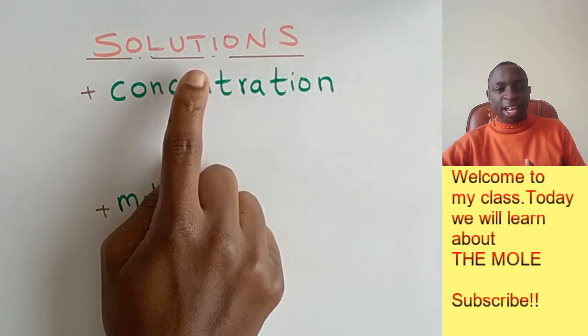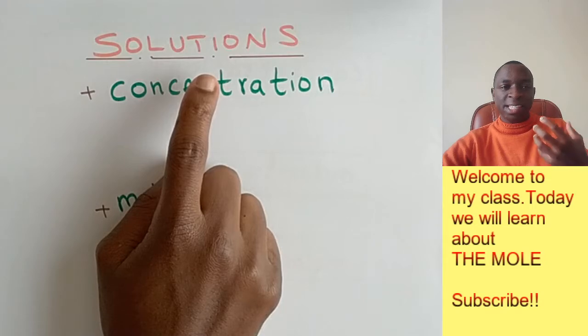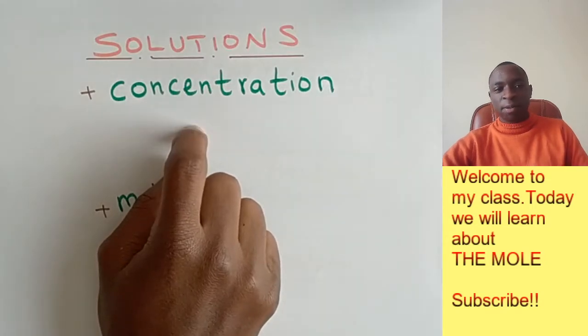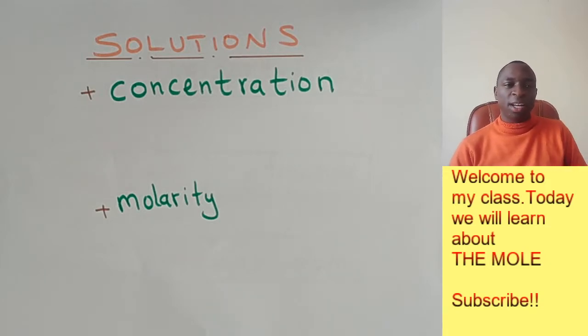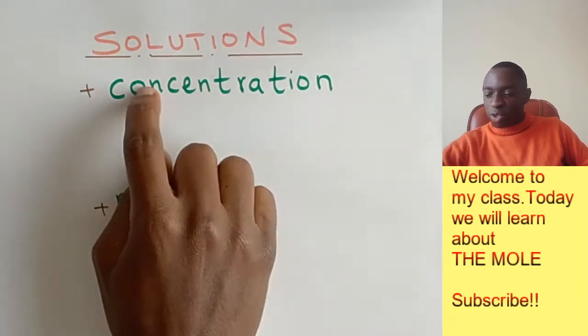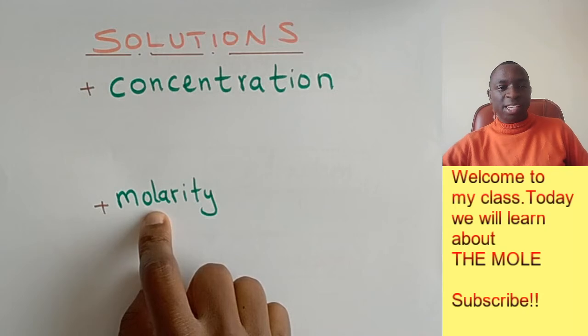But today we will not look at those kind of solutions, we are going to look at the solutions made by dissolving things in water or other solvent. Take for example, if you take a teaspoon of salt and you dissolve it in a cup of water, so you end up with a solution of salt and that solution has a certain concentration. So that concentration is what we are talking about here. And then we shall move on and talk about what is known as molarity.